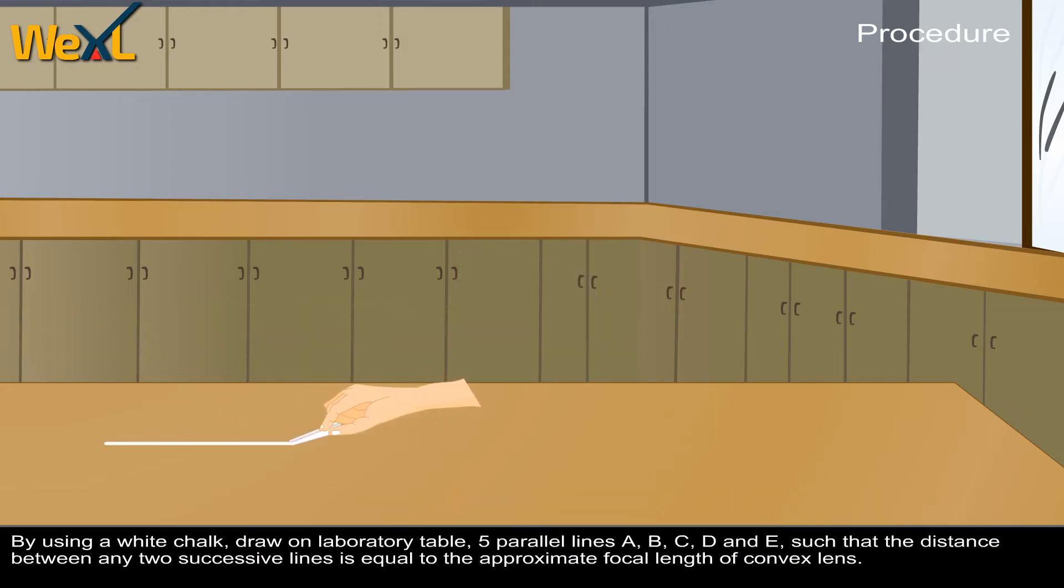By using white chalk, draw on laboratory table five parallel lines A, B, C, D and E such that the distance between any two successive lines is equal to the approximate focal length of convex lens.